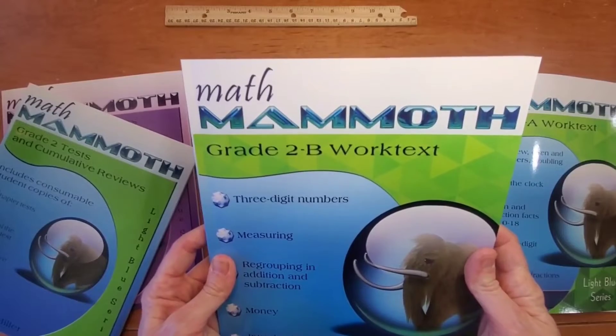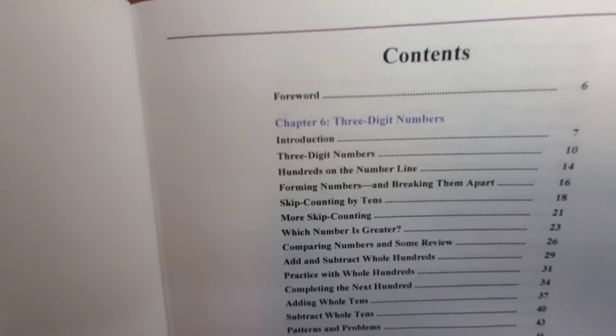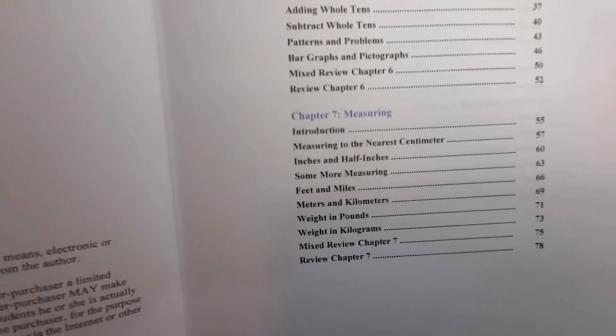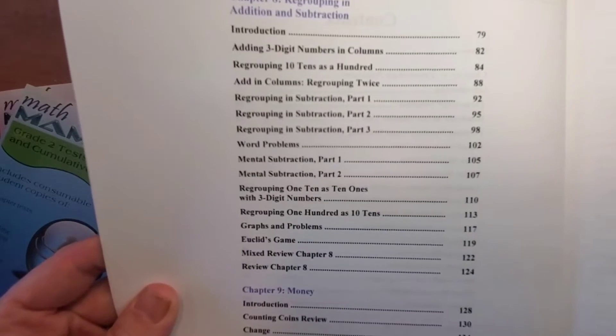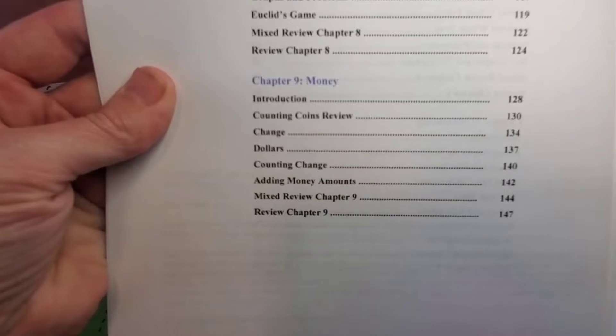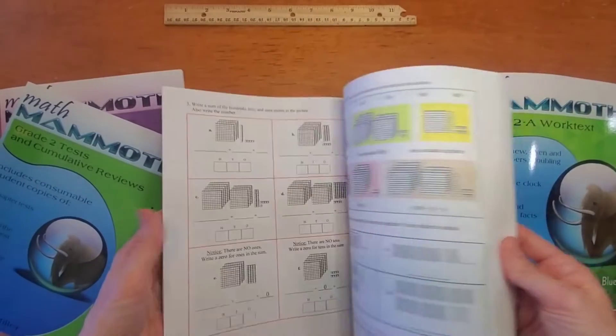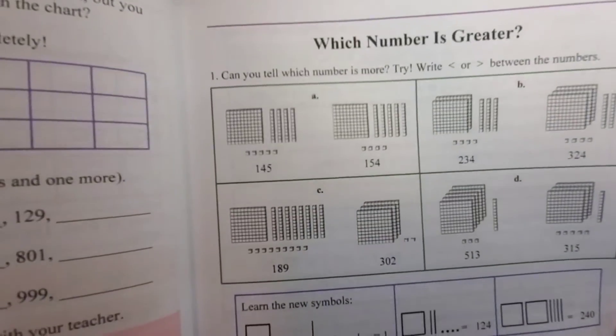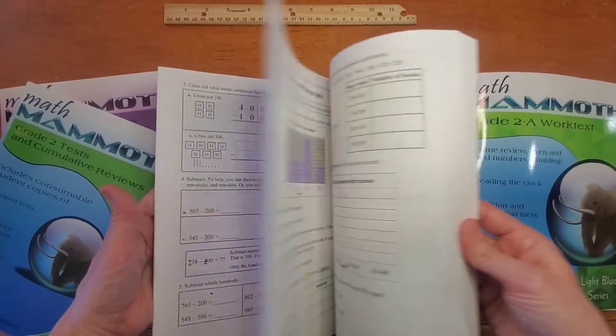And the grade 2B worktext covers three-digit numbers, measuring, regrouping in addition and subtraction, regrouping in addition, money, and exploring multiplication. Again, different visual ways to look at things, and different ways of thinking about things, and then practicing them.